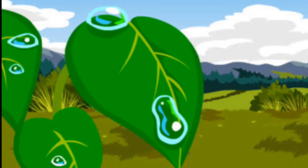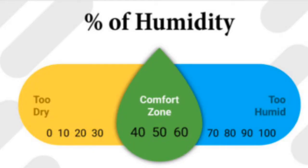Next is water vapors. Water vapors are formed by the evaporation of water from oceans, rivers, and lakes — sun unko heat karta hai and then it evaporates. The amount of water vapor present in air is called its humidity. When the amount of water vapor is more in air, the humidity is high and the air is said to be humid. When the amount is less, the humidity is less and the air is said to be dry.